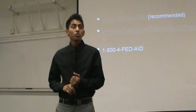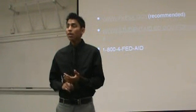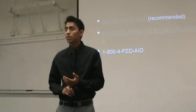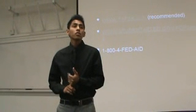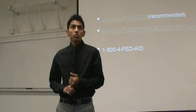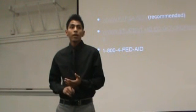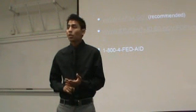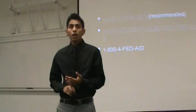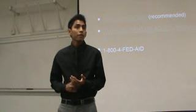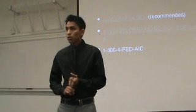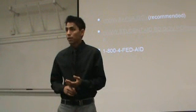Questions 93 to 100 are only for independent students who answered yes to any of questions 45 through 57. In this section, you will provide the number of people that live in your household, the number of college students in your household, and information about any benefits you receive, such as food stamps or free or reduced lunch.